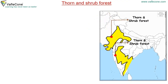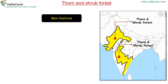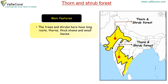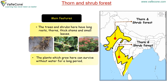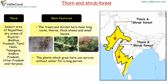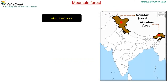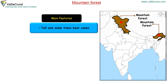Thorn and Scrub Forest: The trees and shrubs here have long roots, thorns, thick stems and small leaves. The plants which grow here can survive without water for a long period. These forests are found in the desert areas of Rajasthan, dry areas of Gujarat, Madhya Pradesh, Tamil Nadu, Telangana, Andhra Pradesh, Uttar Pradesh and Haryana.